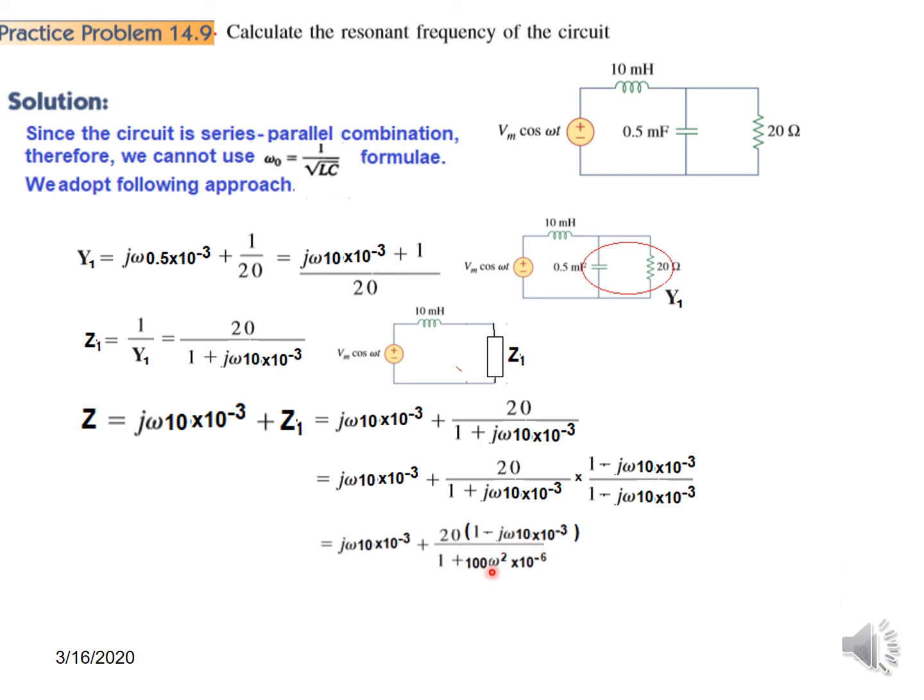So now j is gone from the denominator, and separately writing the two terms, this is the real term and now we take the j terms.